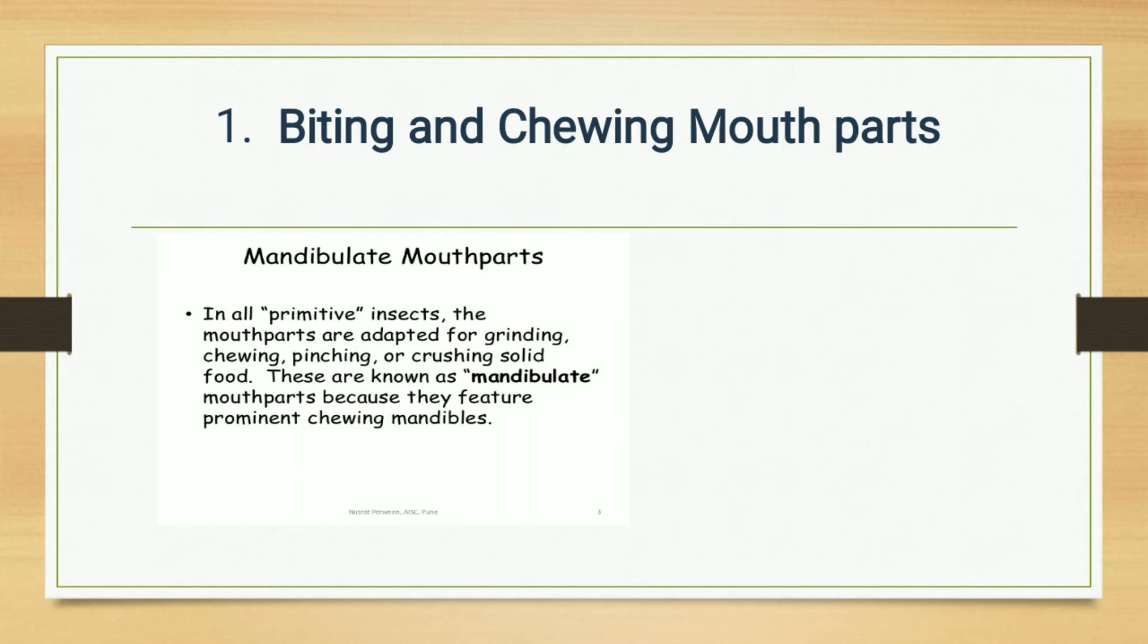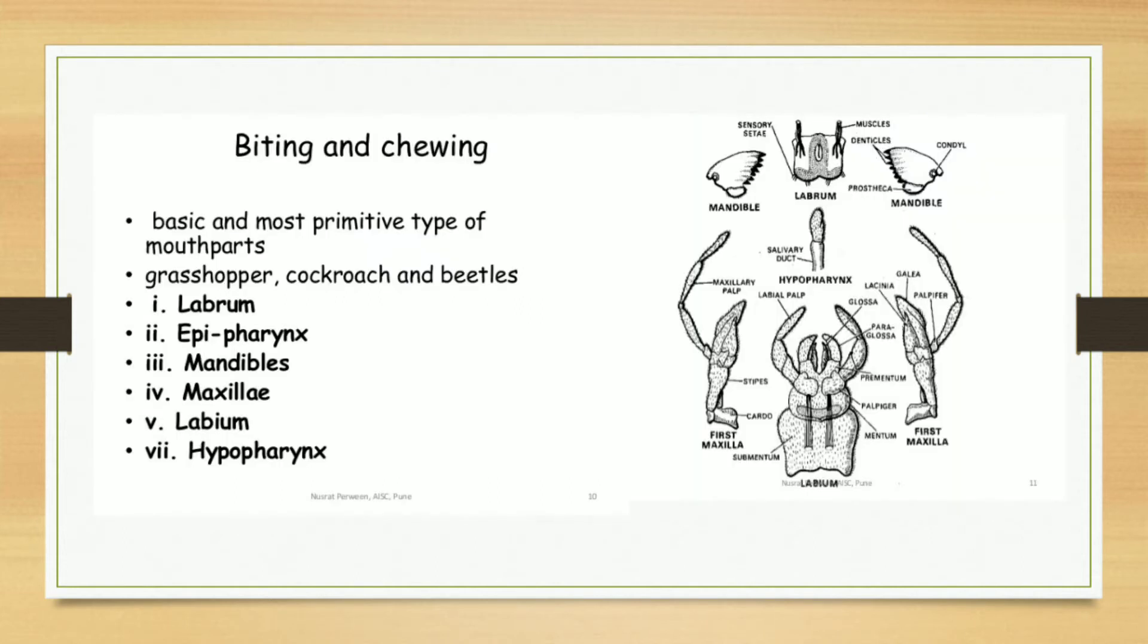Our first type of mouthpart is biting and chewing mouthparts, or simply mandibulate type of mouthparts. In all primitive insects, the mouthparts are adapted for grinding, chewing, pinching, or crushing solid food material. These are known as mandibulate mouthparts because they feature prominent chewing mandibles. These are the basic and most primitive type of mouthparts. The example of this mouthpart is grasshopper, cockroach, and beetles.